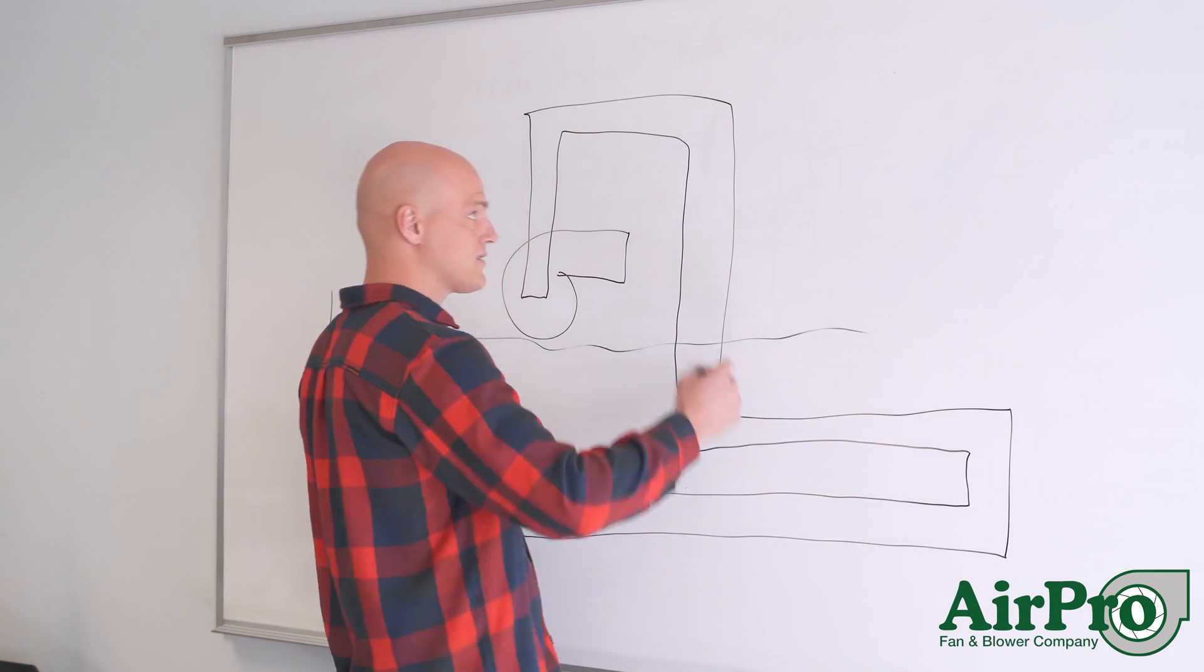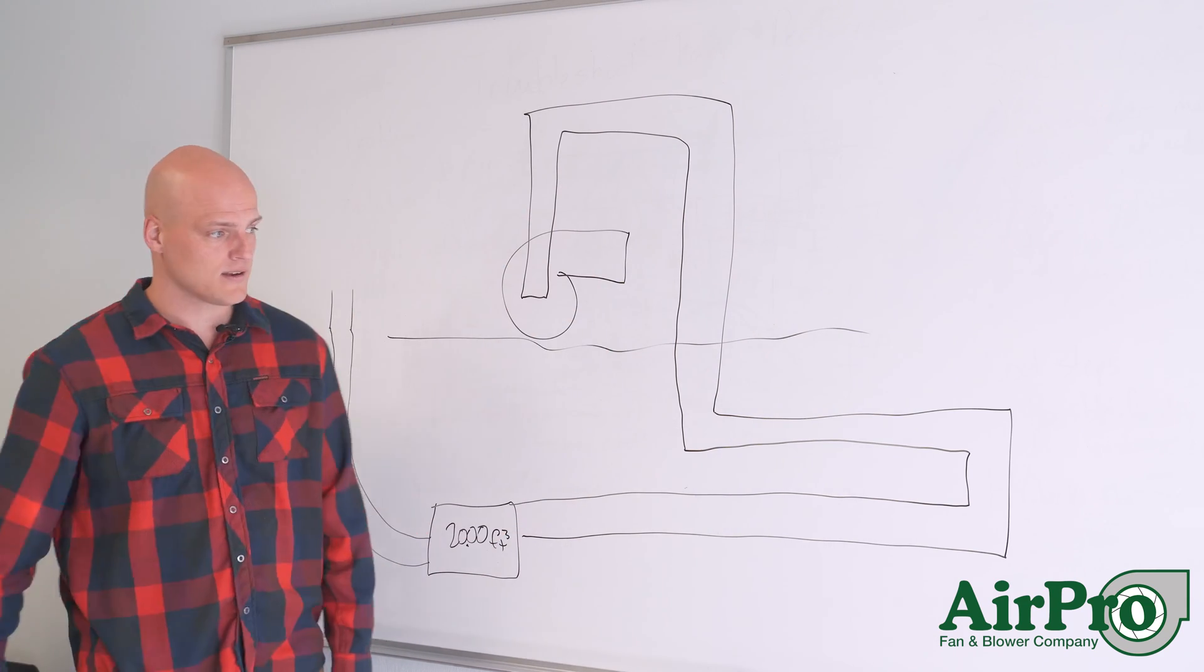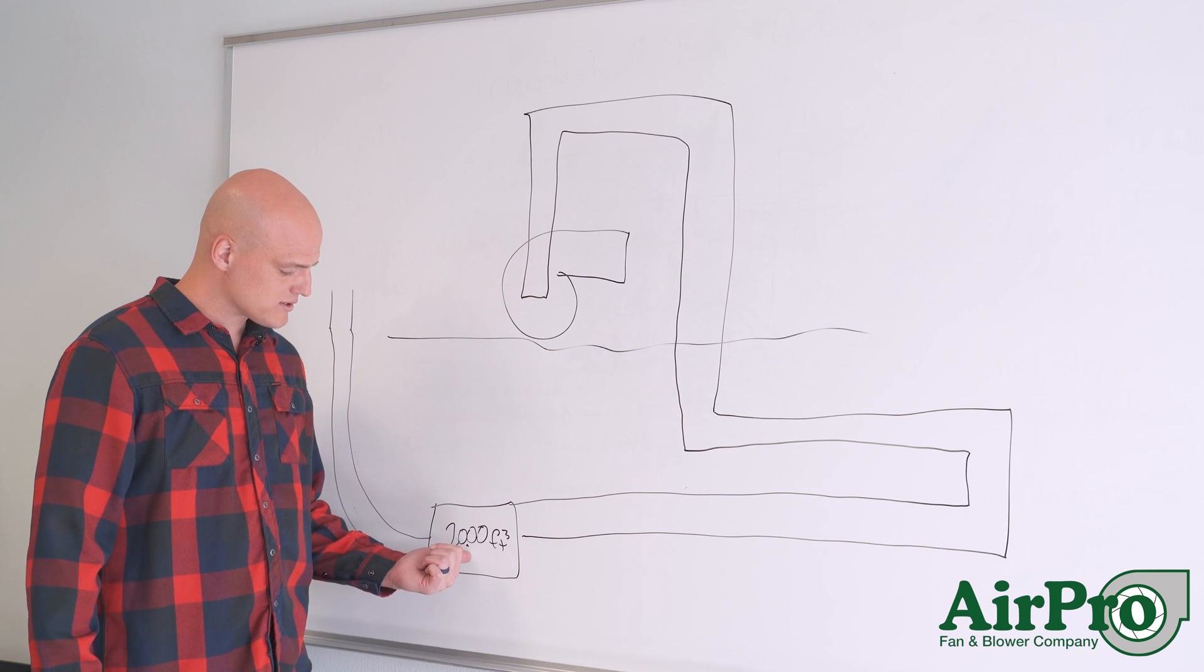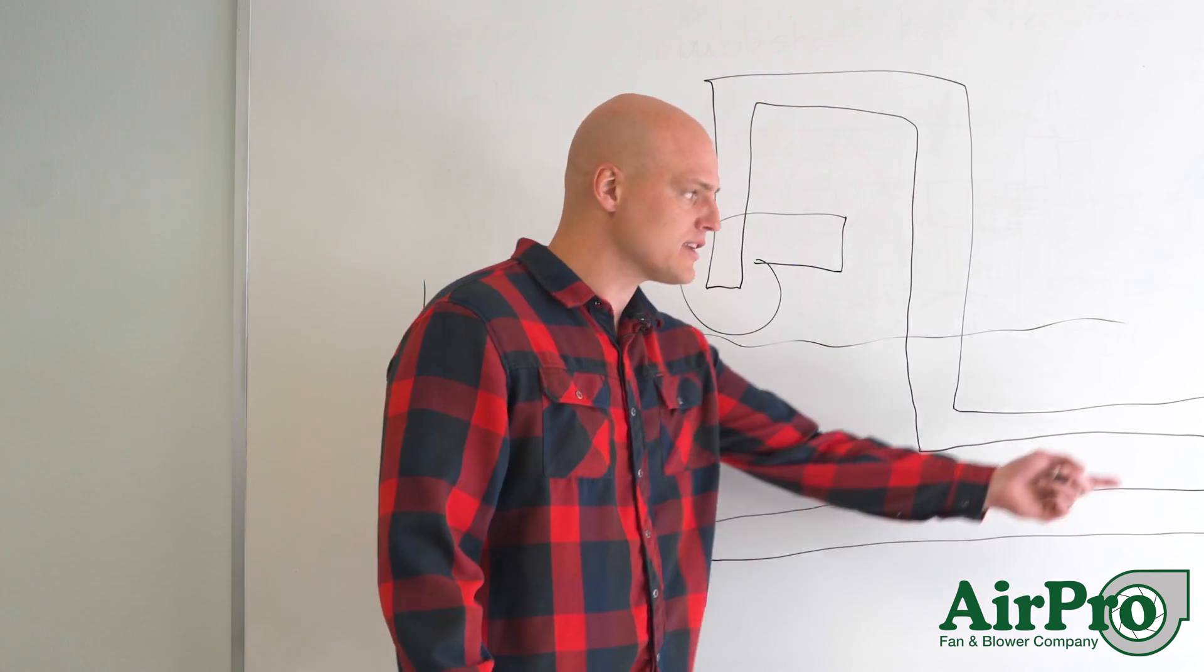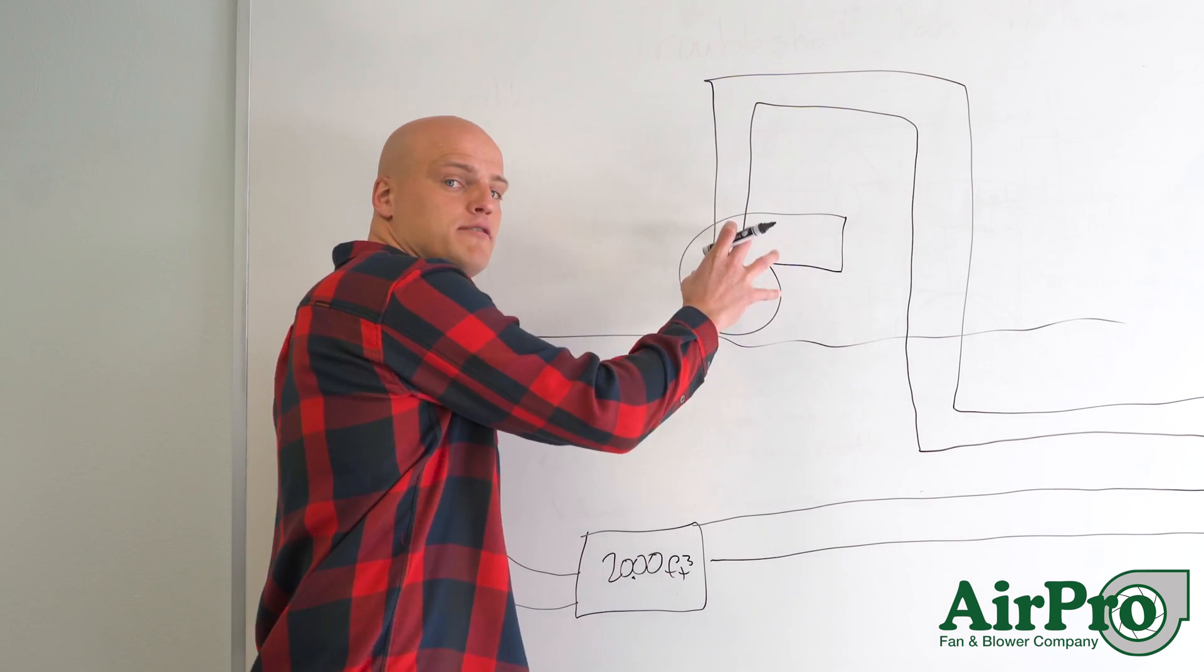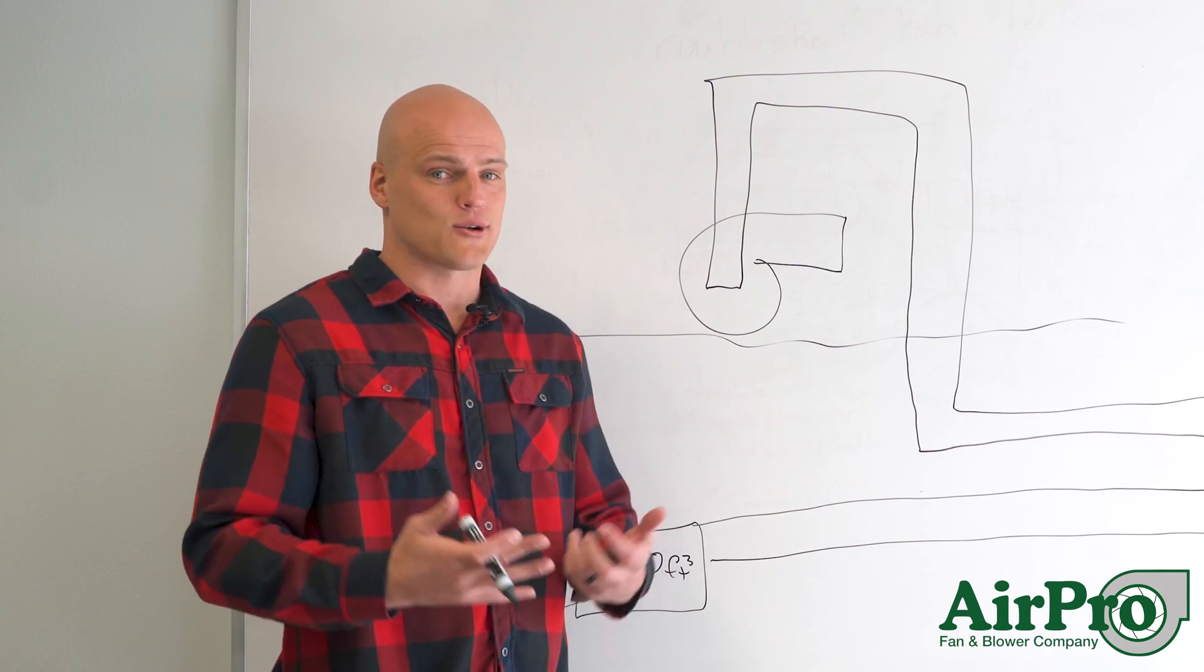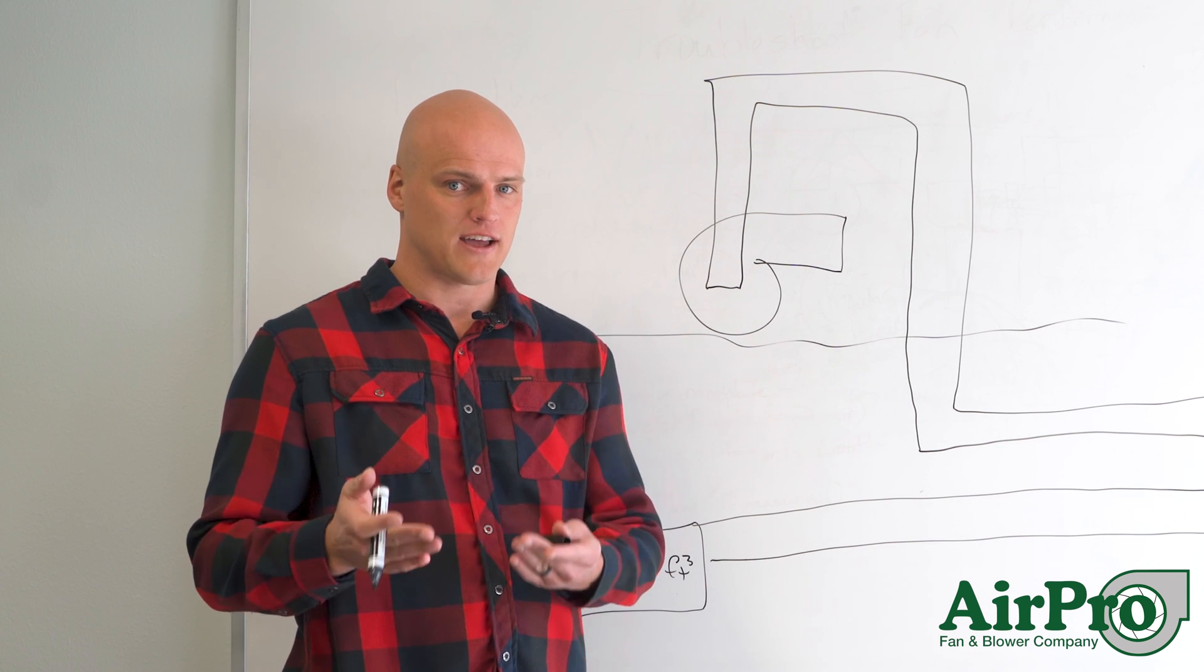And whatever the calculation of static pressure is of this entire run of duct all the way to the fan say for the sake of this video it's 20 inches of water column. You would need 1,000 cubic feet per minute at 20 inches of water column in order for this centrifugal fan to let you live way under the surface in this room. And that's a real basic conceptual drawing of what a centrifugal fan does.